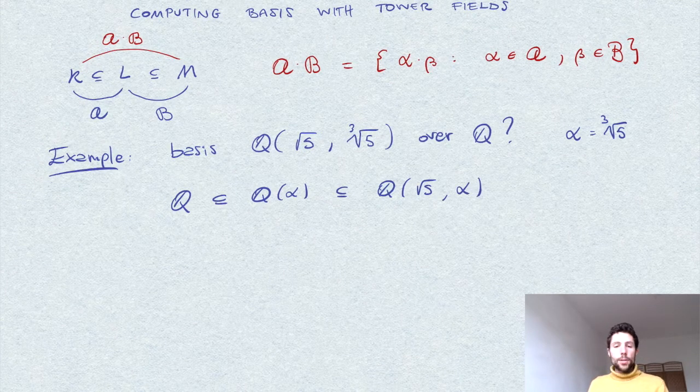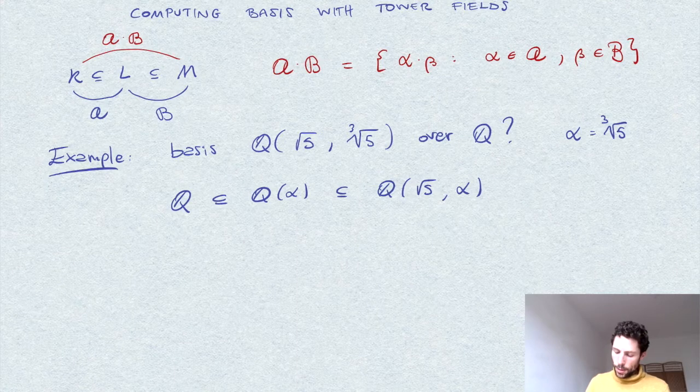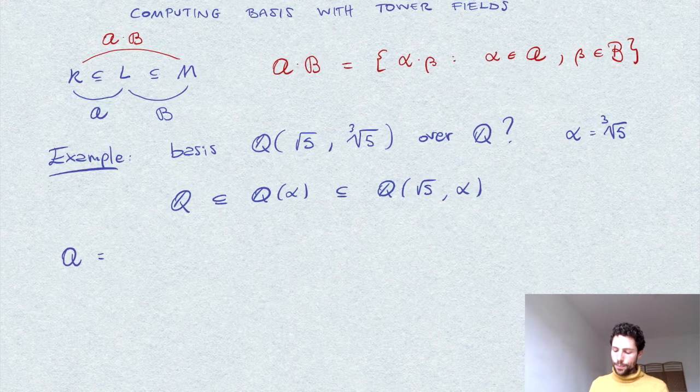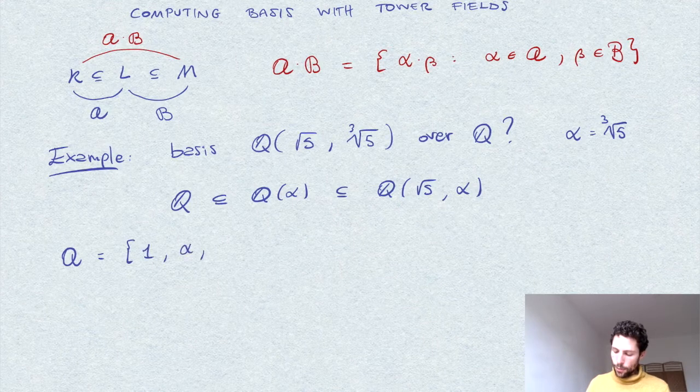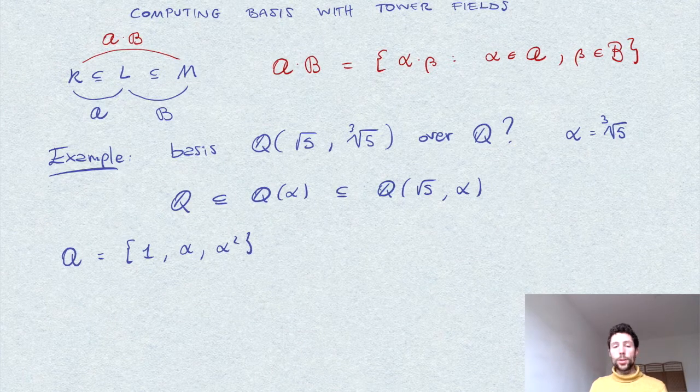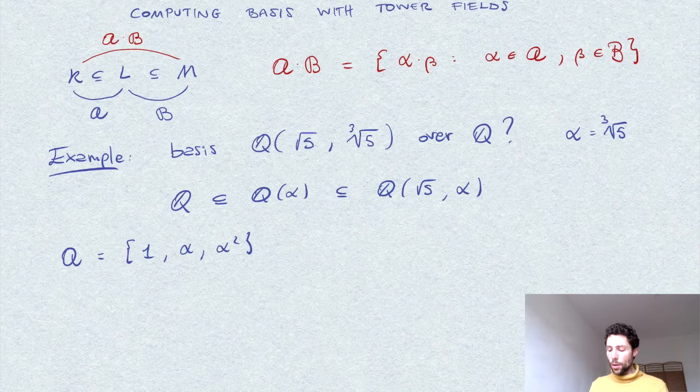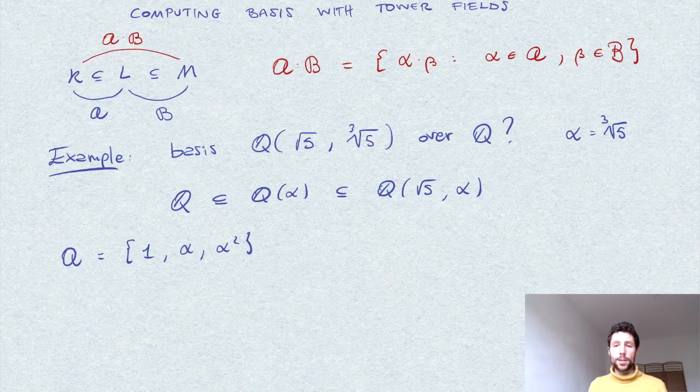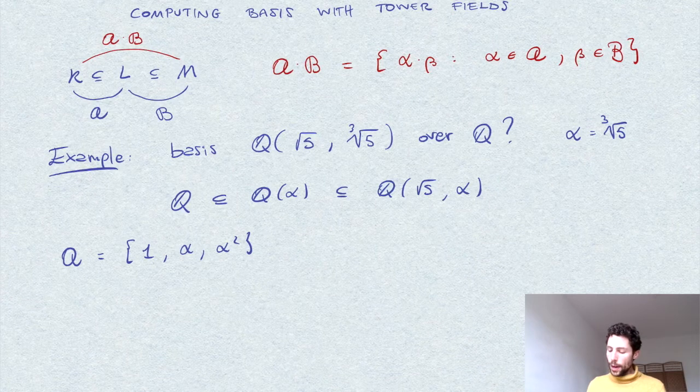The basis of Q of alpha over Q is quite immediate, so it's called A, the basis given by 1, alpha, alpha squared. Since alpha, the cubic root of 5, is an element of degree 3 over Q, it satisfies the polynomial x cube minus 5.